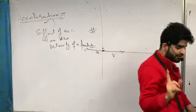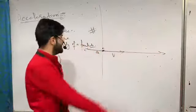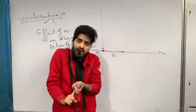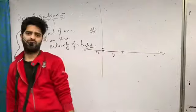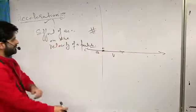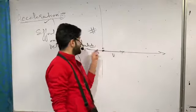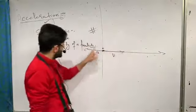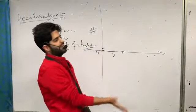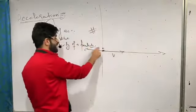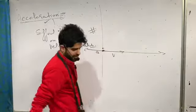Acceleration is not always in the direction of motion. Acceleration can sometimes be in the direction of motion and sometimes opposite to the direction of motion. In one-dimensional motion, if acceleration and velocity are parallel, velocity magnitude increases; if acceleration is opposite to velocity, velocity magnitude decreases.